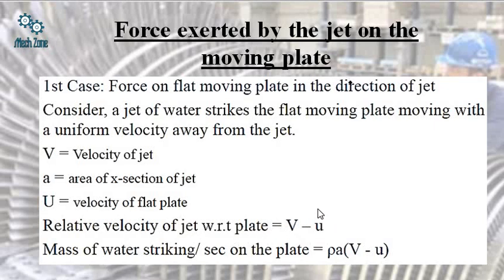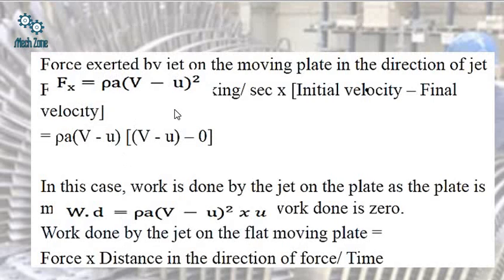So relative velocity of the jet with respect to the plate would be V minus u. Now mass of water striking per second on the plate would be ρAV in the previous case, but here we will keep V minus u. So whenever there is a relative motion between the plate and the jet, we will always keep V minus u instead of simple V. So Fx equals ρA(V-u)². The force which is exerted by the jet on the moving plate in the direction of the jet would be ρA(V-u)².